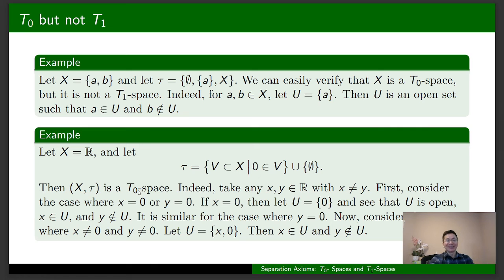How come it is a T0 space? Let's take any two distinct elements x and y. First, consider the case where x = 0 or y = 0. For example, if x = 0, let U be the single-point set {0}. It contains x and it's open because it contains 0, and y doesn't belong to U because y is non-zero — remember that x and y are distinct. The case where y = 0 is similar. Now consider the case where both x and y are non-zero. Let U be the set consisting of x and 0.